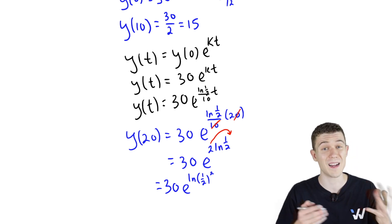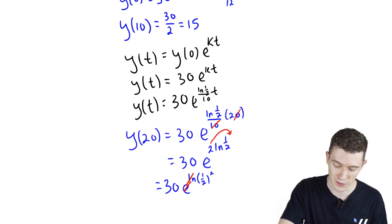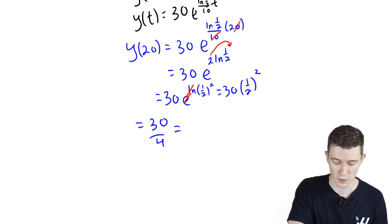And now e and ln can undo each other once more. We can cancel these. We'll just get 30 times 1/2 squared. 1/2 squared is 1/4. 30 over 4 looks like 7.5.